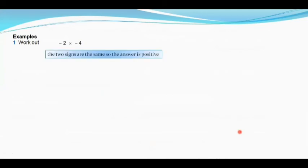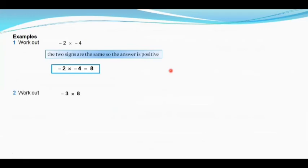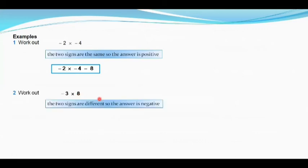Let's work out minus 2 times minus 4. Both have the same sign, so the answer is positive: minus 2 times minus 4 is positive 8. Next, minus 3 times positive 8: two different signs, so the answer is negative — minus 3 times 8 is negative 24.